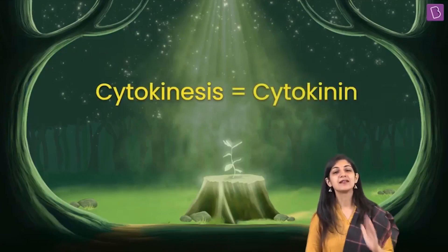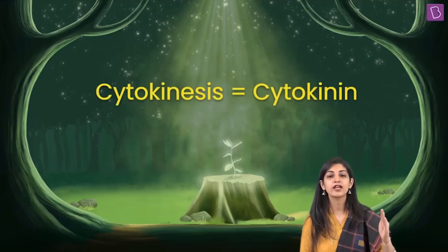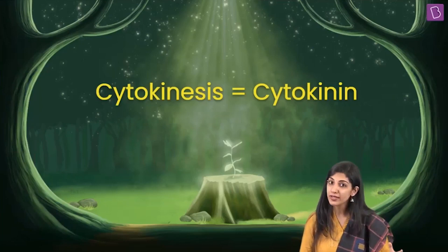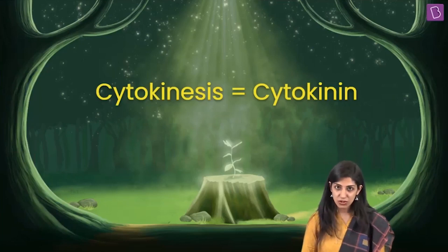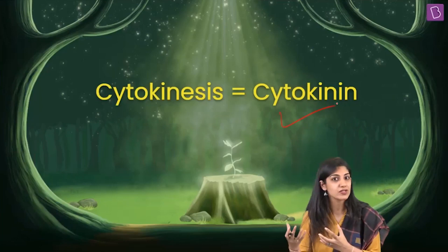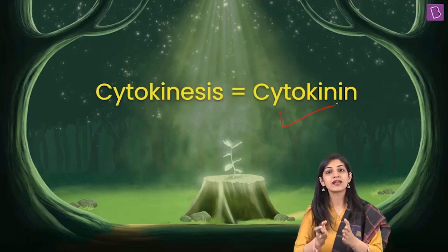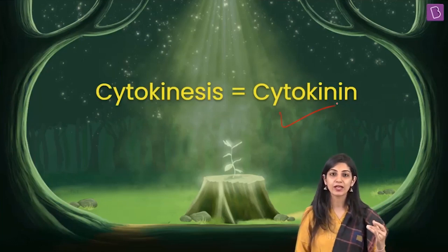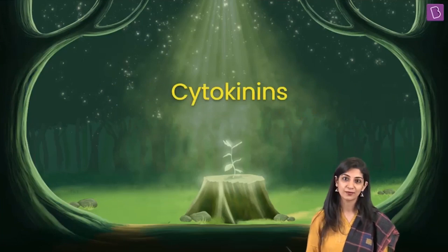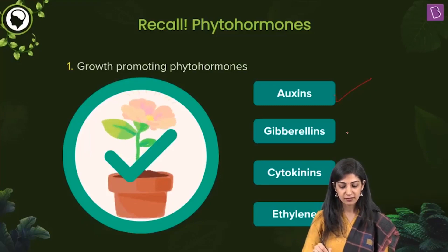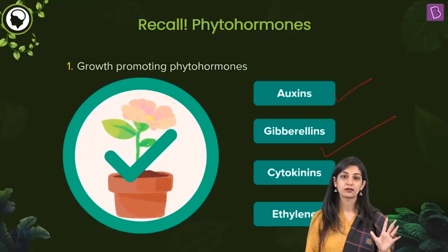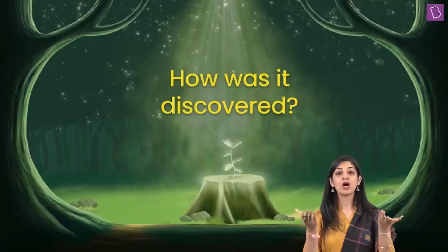Cytokinesis, or the division of the cell, is regulated — and it's very easy the way we are going to explain it. Cytokinesis is regulated by a naturally occurring substance called cytokinin. We are very lucky they did not give a new term — it is simply known as cytokinin because it enhances or promotes cytokinesis. So till now we have studied auxins and gibberellins, and the third growth promoter we are going to do is cytokinin.